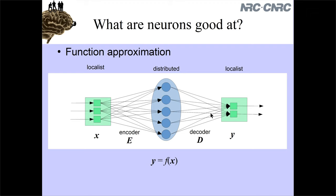The general idea is very similar to a standard single hidden layer neural network. I have some input - that's the vector these neurons are representing. In this particular case, I have five neurons representing a three-dimensional input - a three-dimensional vector coming in. The five neurons form a distributed representation of that input; that's what the encoder connection weights are doing. Then the decoder connection weights - the connection weights from the hidden layer of neurons to the output - compute some function or value Y that's coming out. Y is some function of X, Y is two-dimensional, X is three-dimensional, and the decoder pulls out whatever particular function we want.